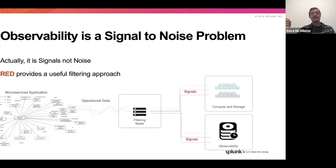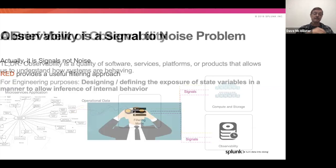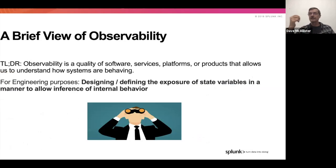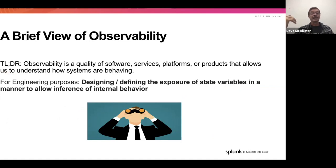Kubernetes definitely drives some of the more complex environments we look at. The TLDR here: observability is the quality of software, services, platforms, and products that allows us to understand how systems are behaving. The more technical model from control theory is designing the exposure of state variables to allow inference of internal behavior. You see this in regular life — if the heat index on your car goes to the high end, you can tell something is going wrong.